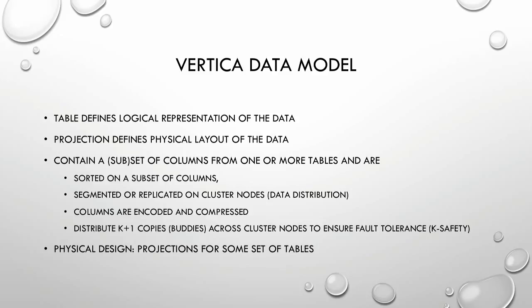For a projection with ten columns C1 through C10, deciding which columns to sort on and how to distribute the data across the system are non-trivial problems - these are the most defining attributes of performance going forward. In addition, projection columns are going to be encoded and compressed, and we want to choose the best encoding mechanism to minimize storage. We also want to achieve fault tolerance through what we call the K-safety mechanism, where we can afford K nodes to fail in a Vertica cluster.